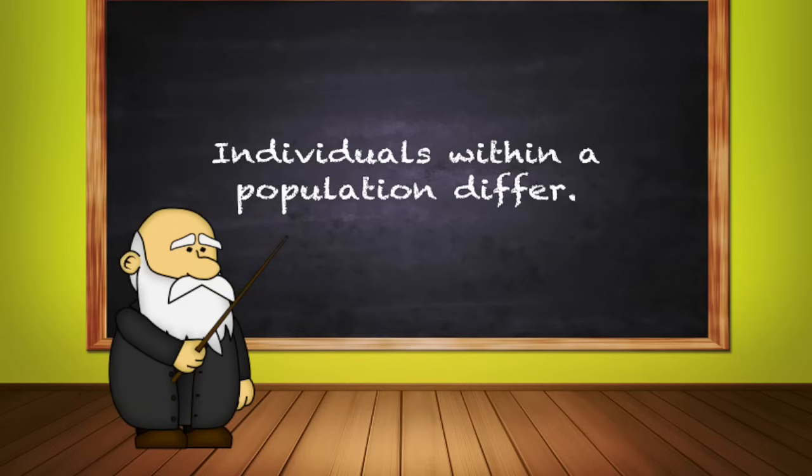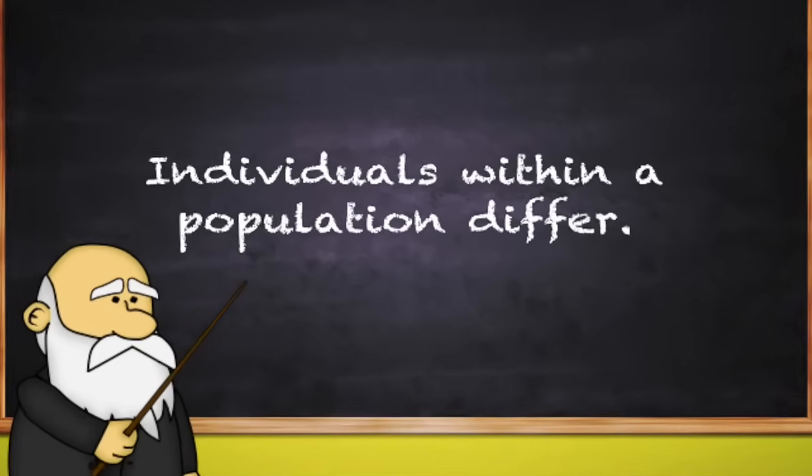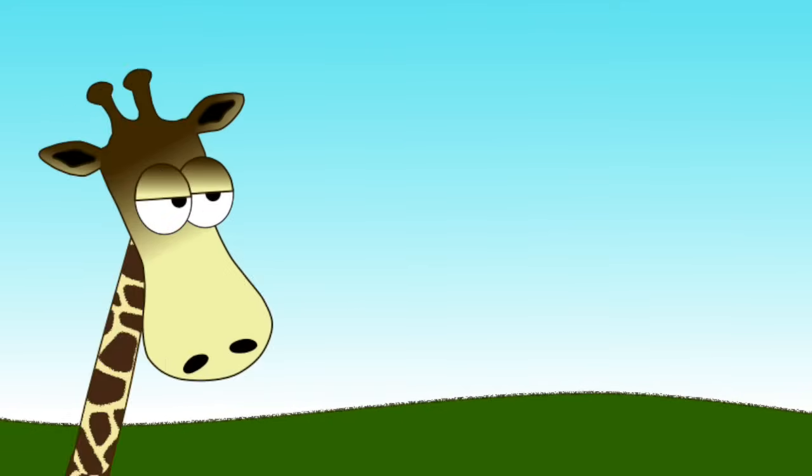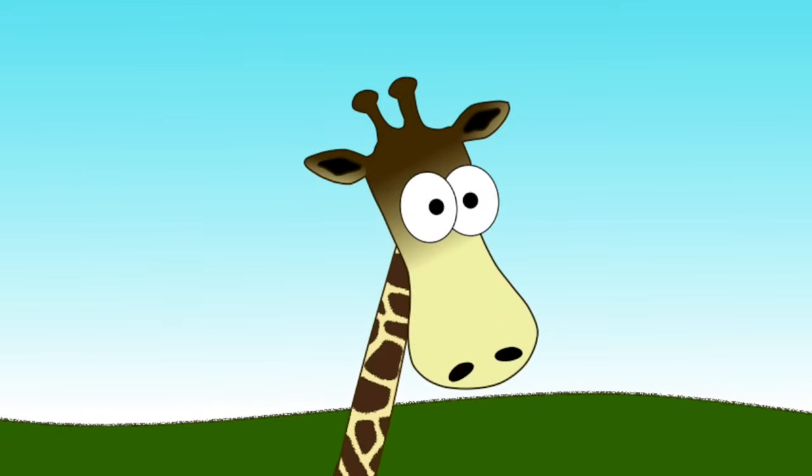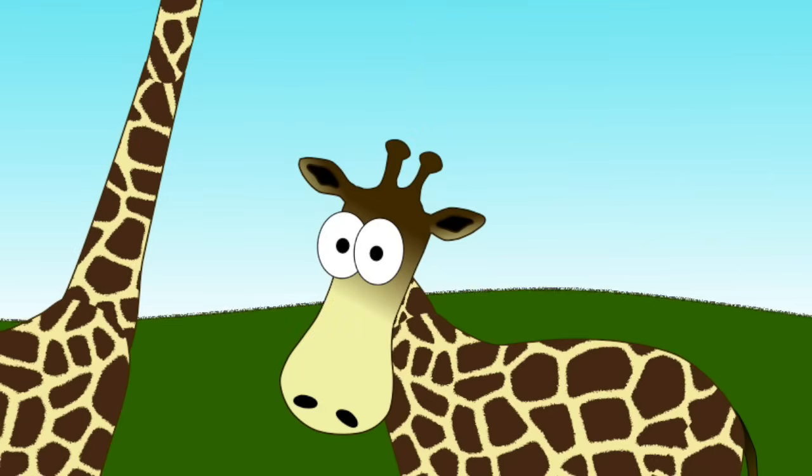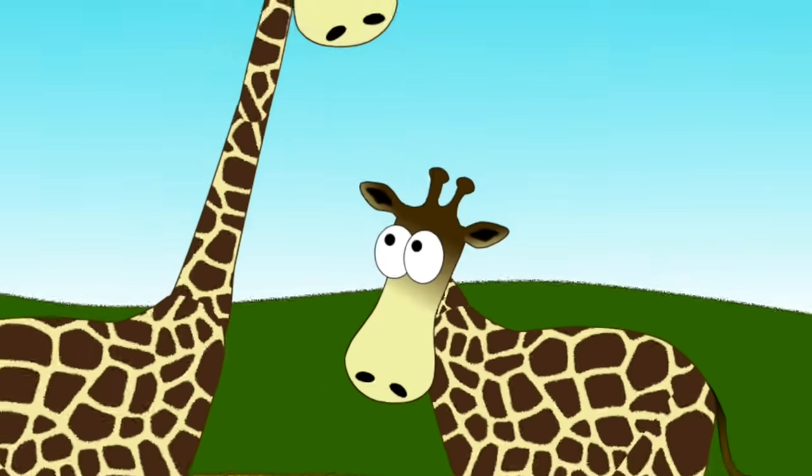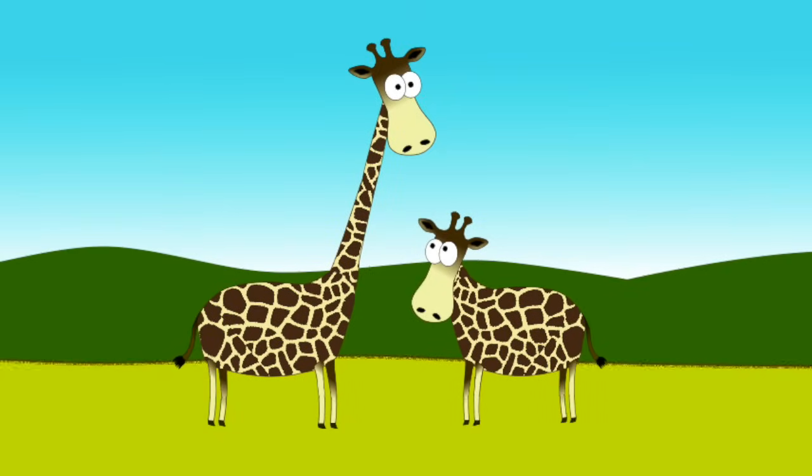Condition number one: Individuals within a population differ. There are features that differ within populations of the same animal. In our case, the feature that varies between our giraffes is neck length. Some giraffes were born with long necks, some were born with short necks.